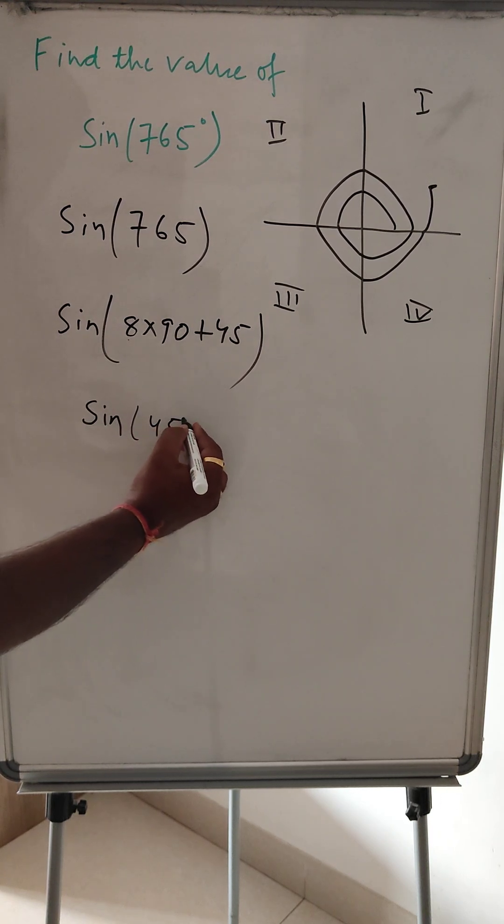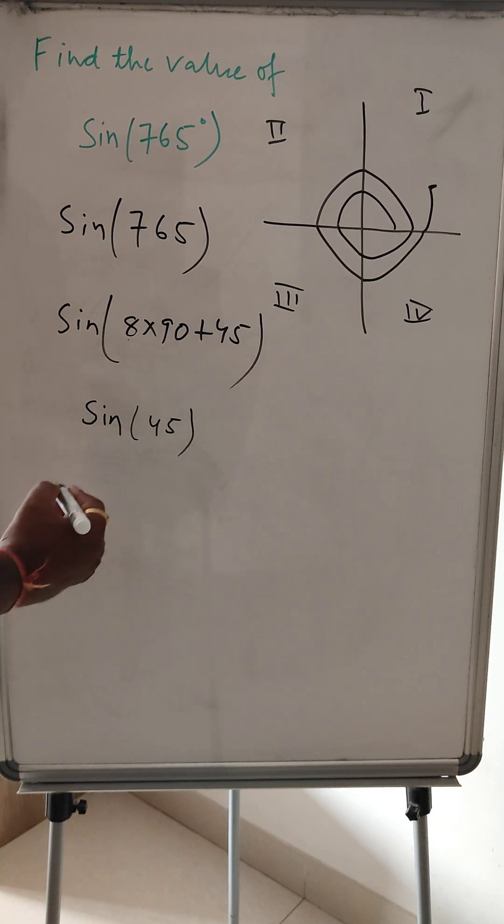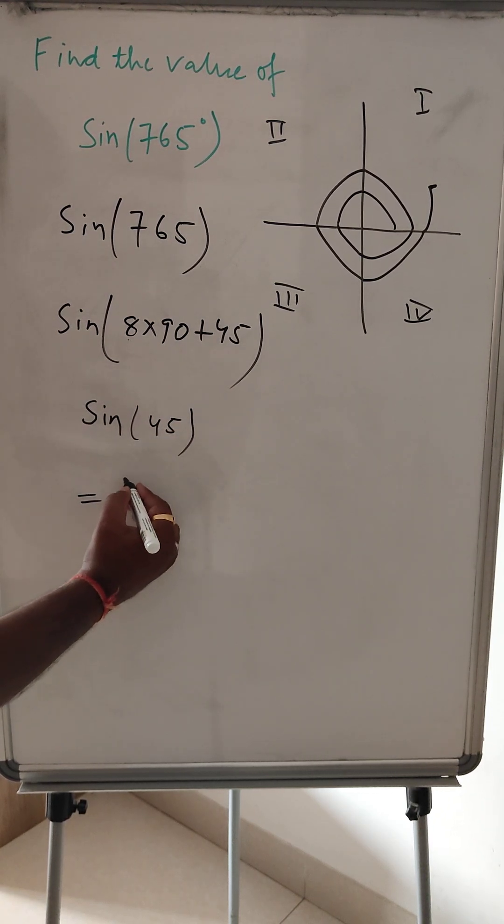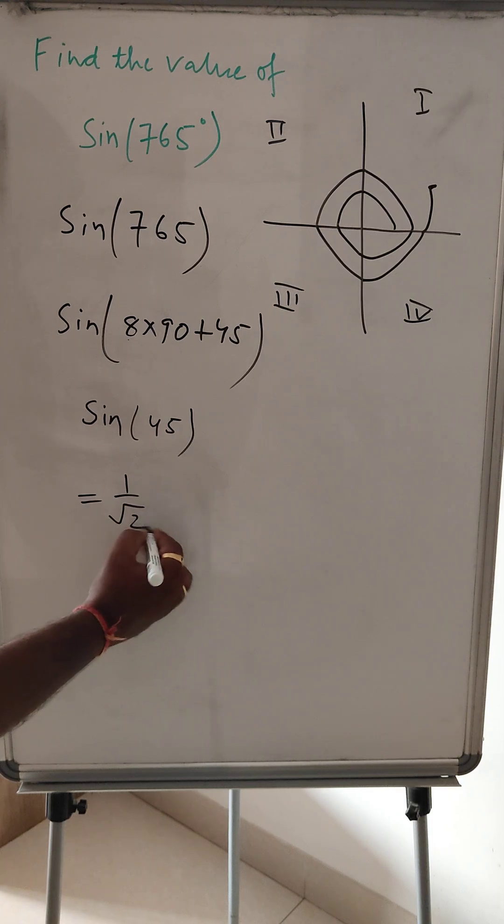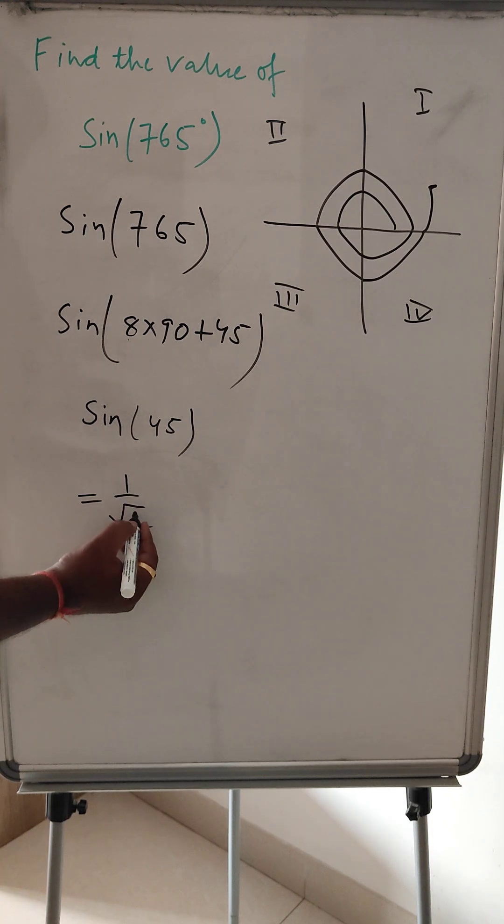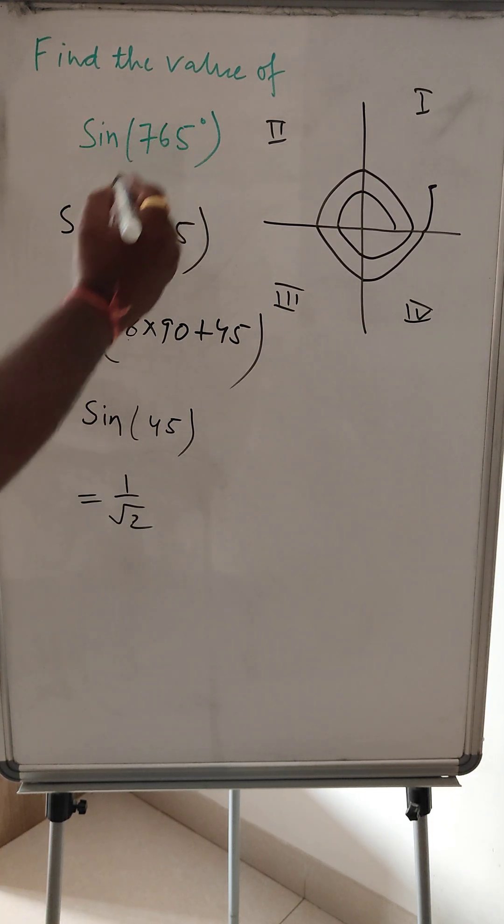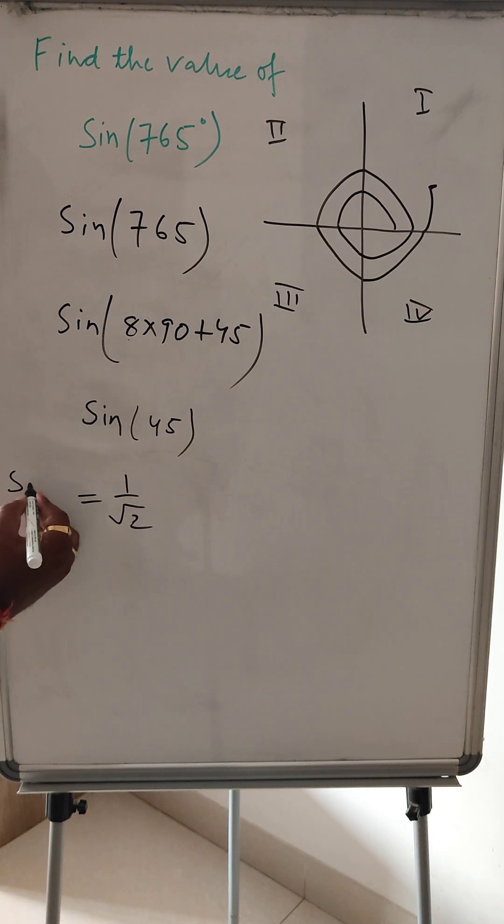So 45. And now sin 45 is nothing but 1 by root 2. So this is the value of sin 765 degree.